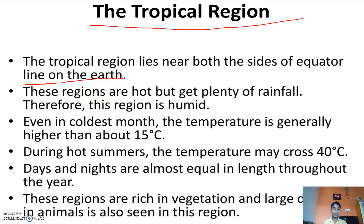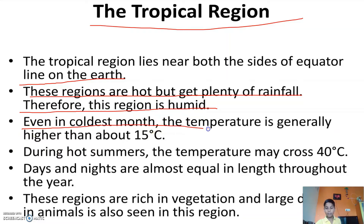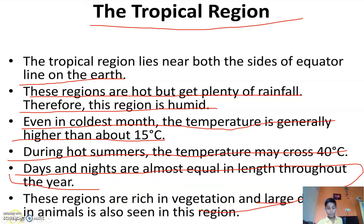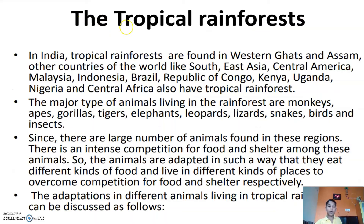The tropical region lies near both sides of the equator line on Earth. There are two types: Tropic of Cancer and Tropic of Capricorn. These regions are hot but get plenty of rainfall, therefore this region is humid in climate. Even in the coldest month, the temperature is generally higher than about 15 degrees Celsius. During hot summer, the temperature may cross 40 degrees Celsius. Days and nights are almost equal in length throughout the year.